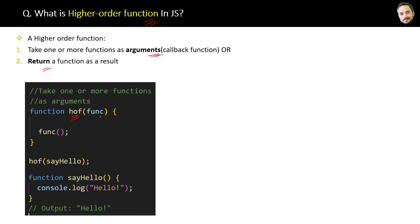Let's focus on the first case. See, we have one function hof which is accepting func as a parameter, so basically a callback function as the parameter. So a function which accepts one or more callback functions is a higher order function.